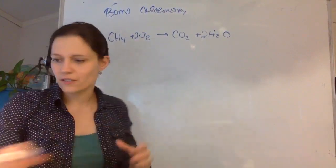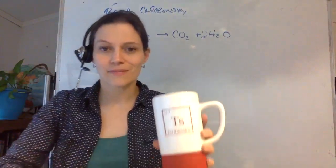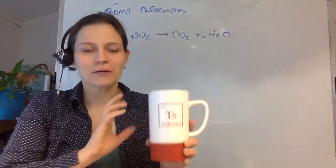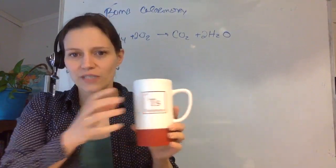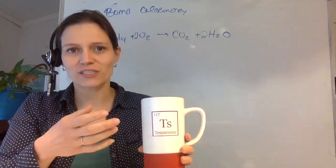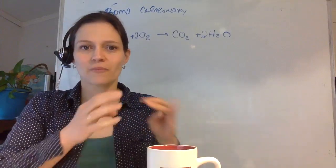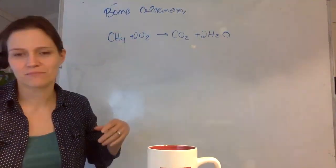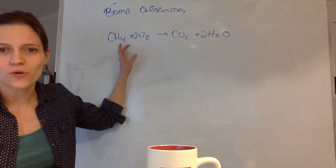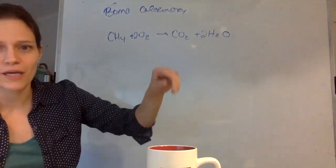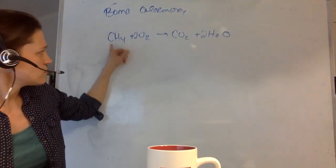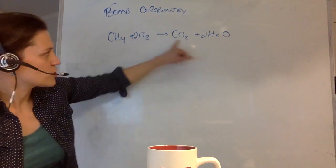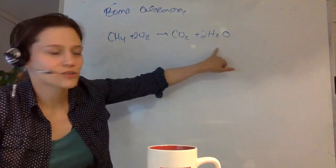So it's this steel bomb. Imagine this is a steel bomb. You put your sample inside, and you detonate it in the presence of oxygen, and the heat that comes from that reaction — so the example I have here is methane, although that's a gas, but it just makes stoichiometry easier. So if we were to combust methane in a bomb calorimeter, in the presence of oxygen, a combustion occurs and it yields CO₂ and H₂O.